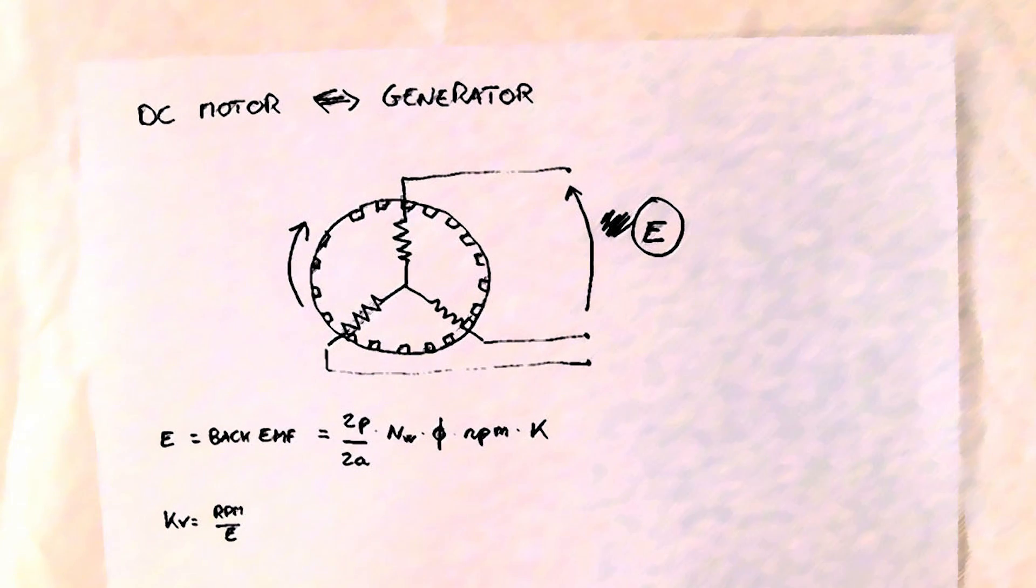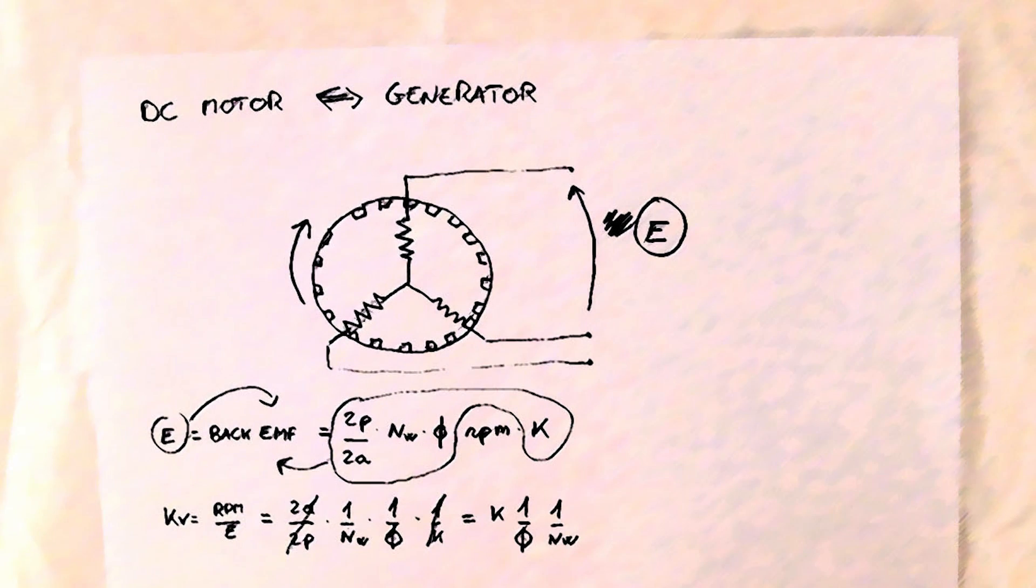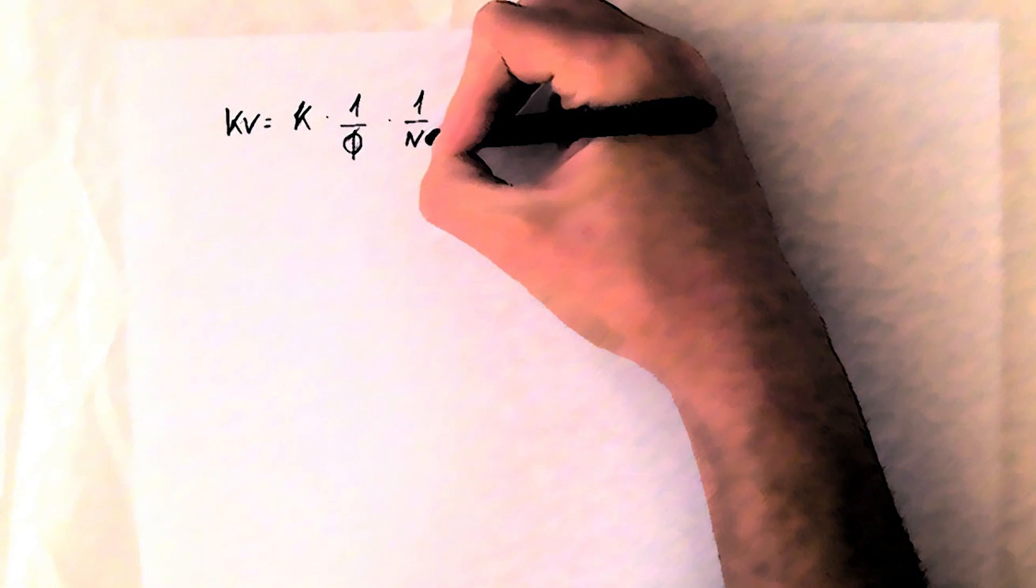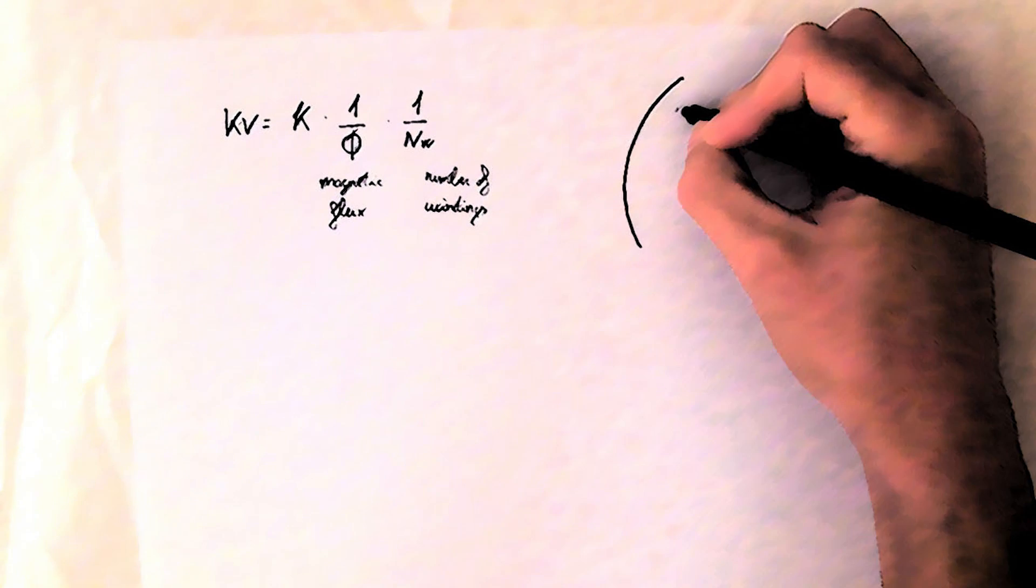From the back EMF formula, it is very easy to find out the KV. Here's the interesting part. Apart from the constant, which keeps inside everything we don't need now, it is inversely proportional to the magnetic flux and the number of coils we have.